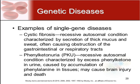Another single-gene disorder is PKU, or phenylketonuria. This is a recessive autosomal condition where there is an excess of phenylketone in the urine, caused by an accumulation of phenylalanine in the tissues, which can actually cause brain injury or even death.